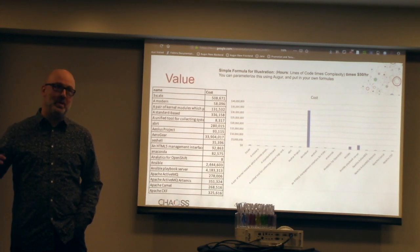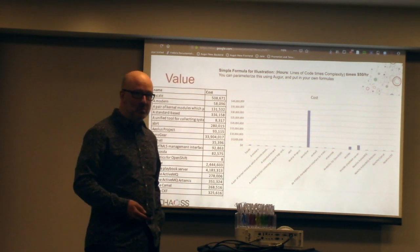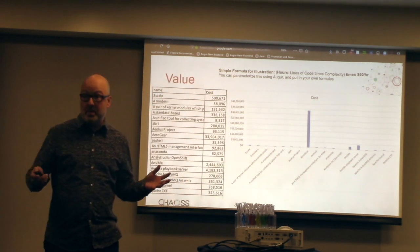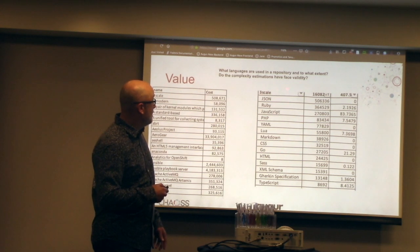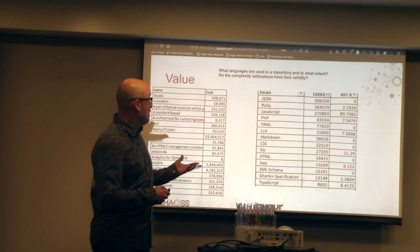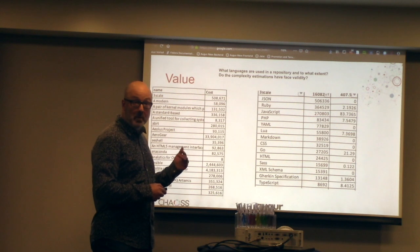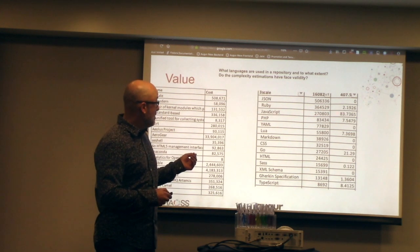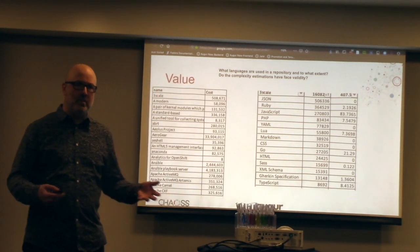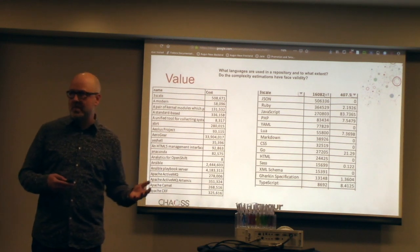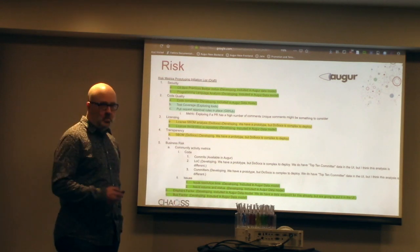When I ran it against Augur, it said it would cost nine million dollars to rebuild — and I'm pretty sure I haven't spent anywhere near that. When you look into a project, you find that many incorporate JavaScript libraries, which look very complex but aren't code you've written. Value metrics give you something you can start to get your head around and tune. For example, the three-scale project has half a million lines of JSON — Ruby, JavaScript, PHP — so you can get a breakdown of how much of each kind of software is in each project.